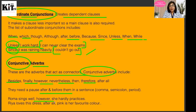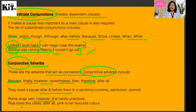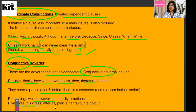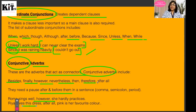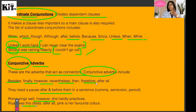For example: 'Roma sings well; however, she hardly practices.' Another example: 'Rhea loves this dress. After all, pink is her favorite color.' And: 'Rohan loves this coat. After all, brown is his favorite color.' 'However' means 'halaki' — despite that, she doesn't practice much. Words like 'therefore' are used repeatedly — for example: 'Because x is a multiple of y, therefore we can say that y is a factor of x.' This is the use of conjunctive adverbs as joining words.